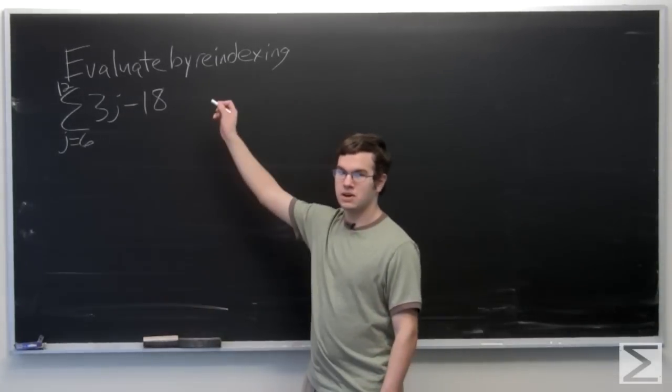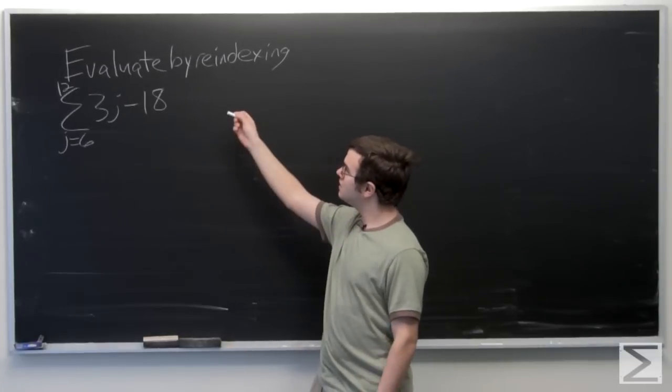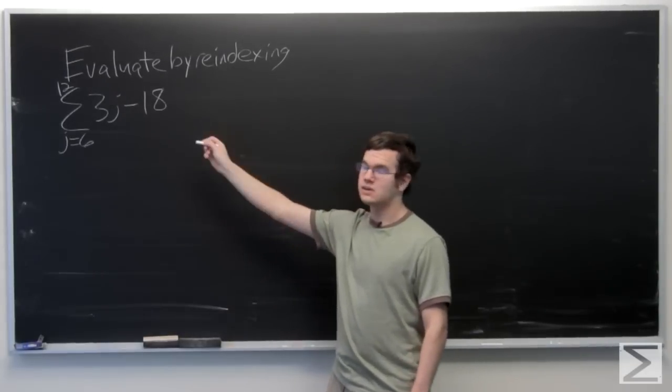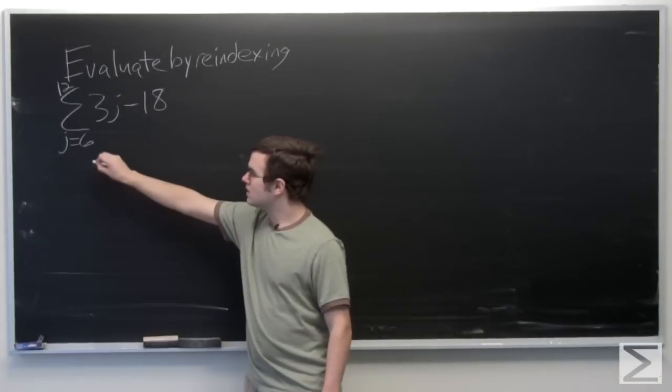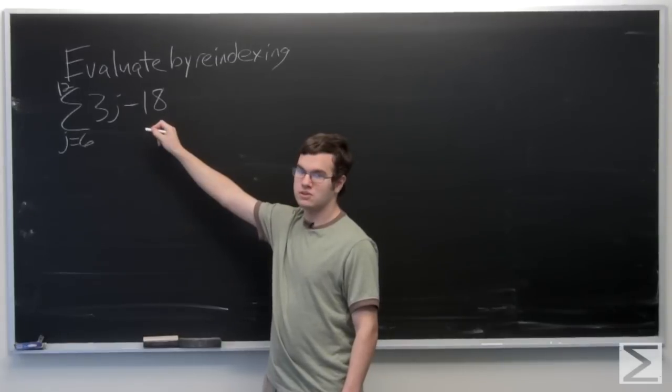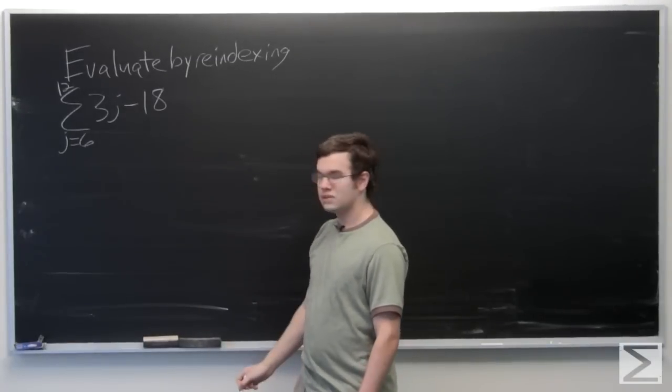Okay, so this problem we have to evaluate by re-indexing the summation here, which is starting at 6 and going from 12 of 3j minus 18.